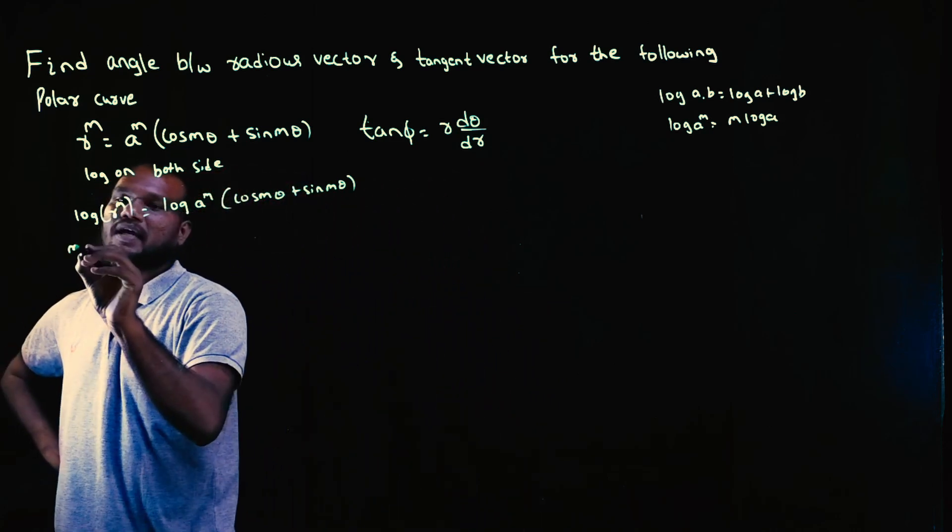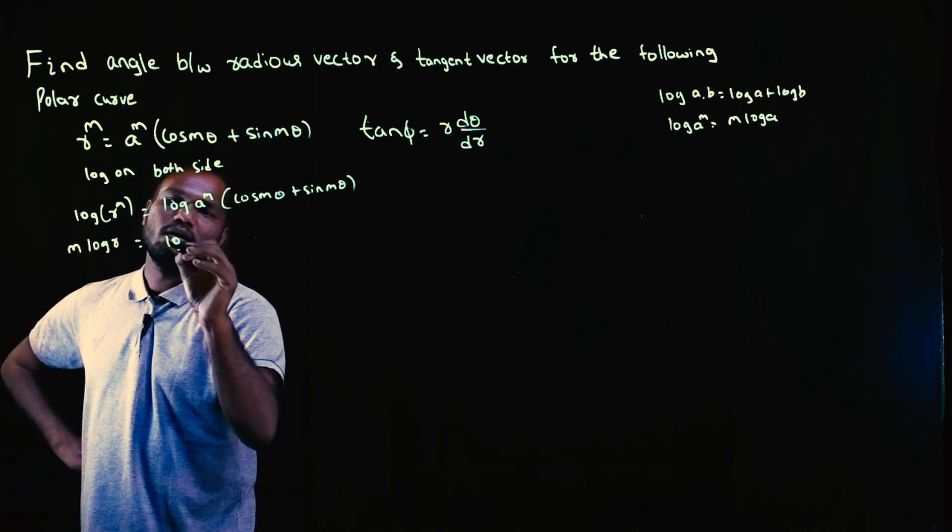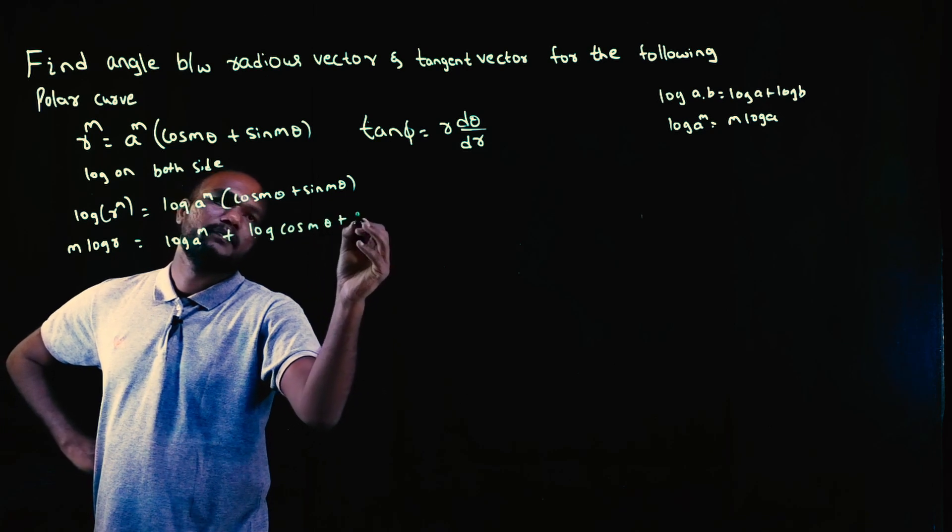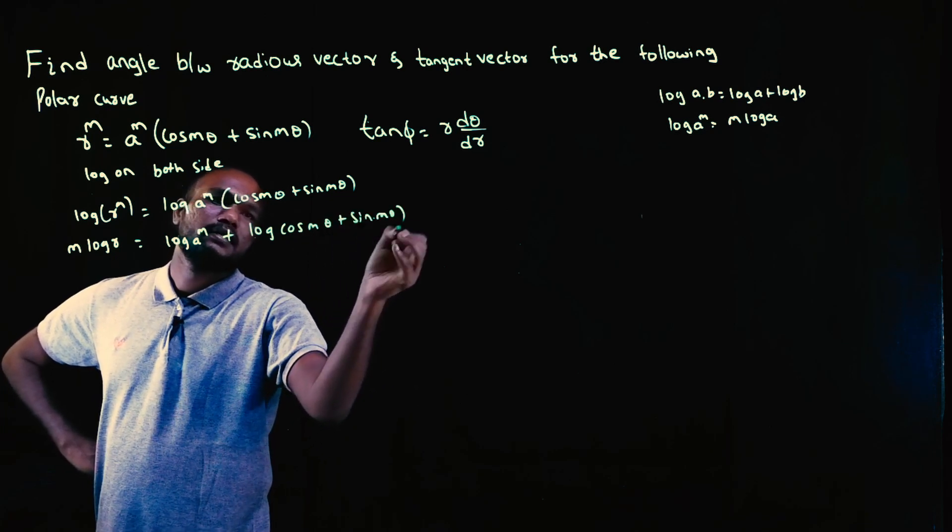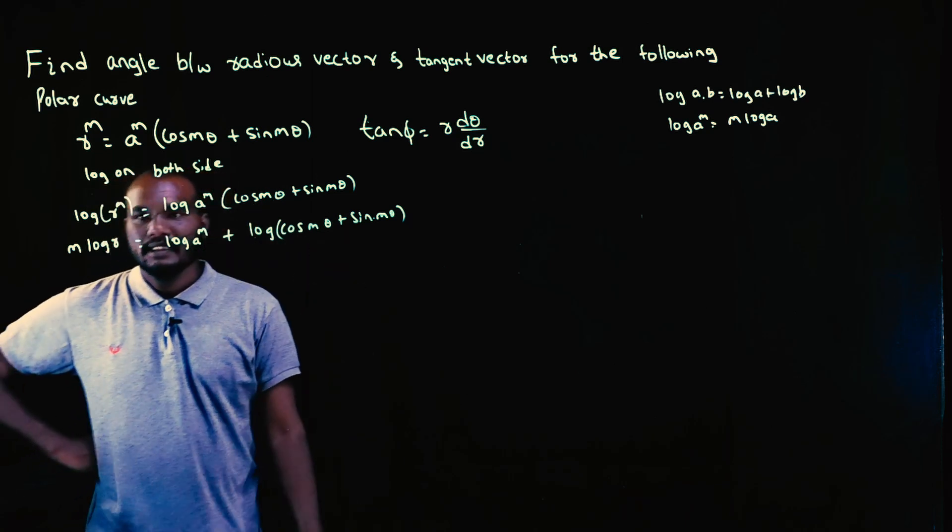So m log r equals log a plus log(cos m theta plus sin m theta).